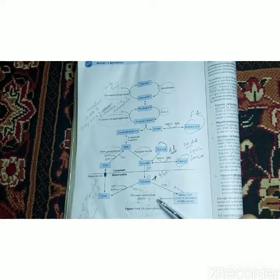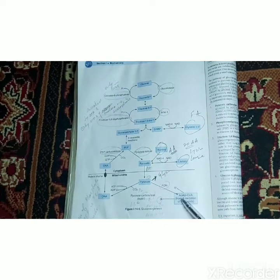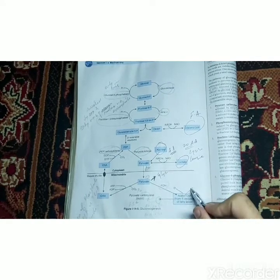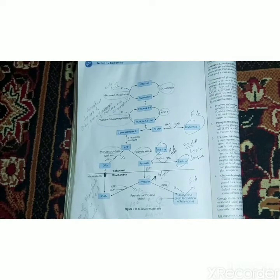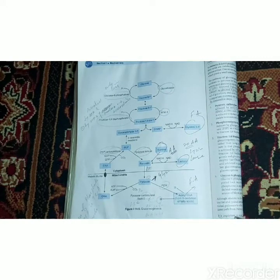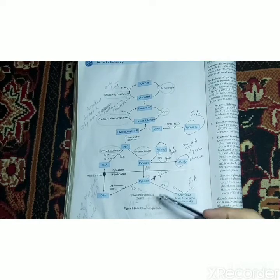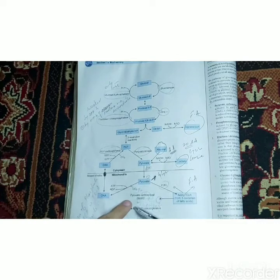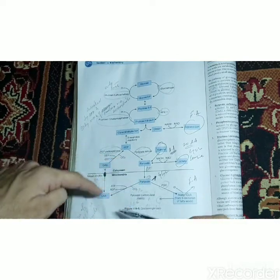If acetyl-CoA is not present, this pathway will not work. This acetyl-CoA comes from beta-oxidation of fatty acids. When we are starving and not eating, our fatty acids stored in adipose tissue are broken down into acetyl-CoA. This acetyl-CoA then activates pyruvate carboxylase to convert pyruvate into oxaloacetate. The pyruvate itself comes from three sources: alanine, lactate, and glycerol-3-phosphate.